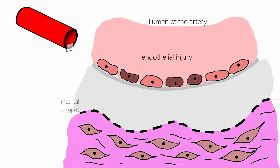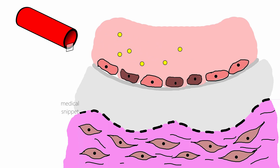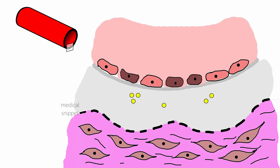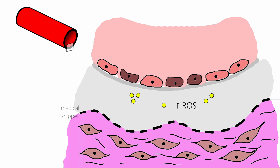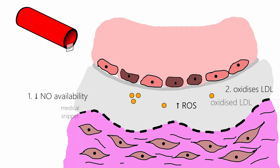When endothelial injury occurs, the permeability of the endothelium is increased, and the circulating LDL now easily gets deposited in the tunica intima. These risk factors increase vascular production of reactive oxygen species, which causes decreased endothelial nitric oxide availability and also causes oxidation of LDL. This is an important part in the pathogenesis of atherosclerosis.